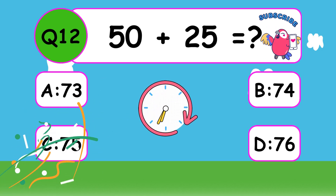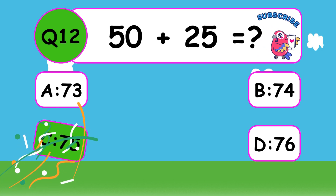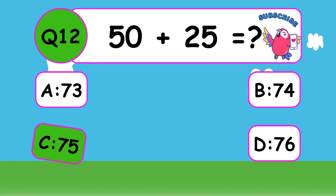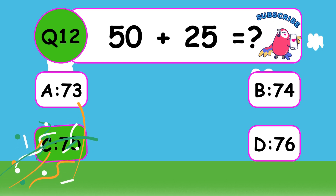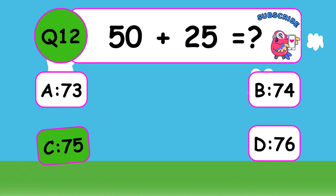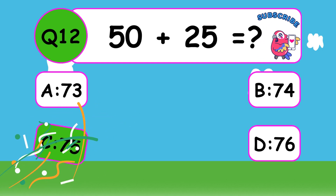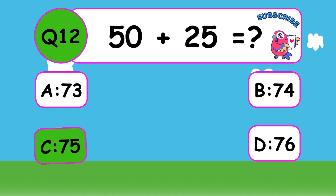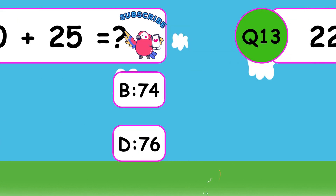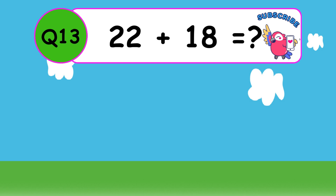What is 50 plus 25? The answer is C, 75. Super work, 50 plus 25 equals 75.